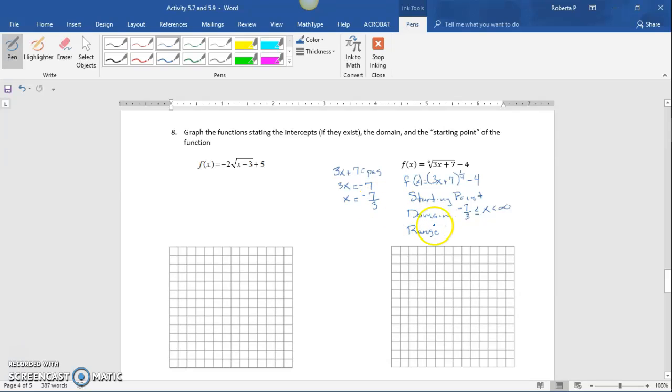Since the range depends on the domain, if we plug in negative 7/3 into 3x plus 7, we get 0. So what's left is negative 4. Now let's graph our function.